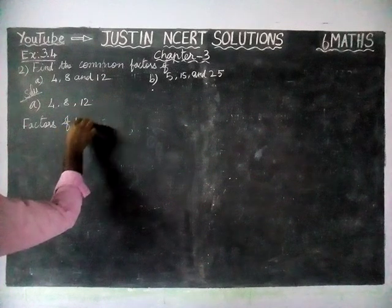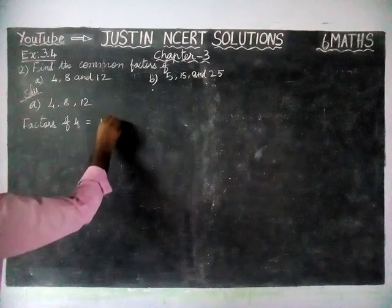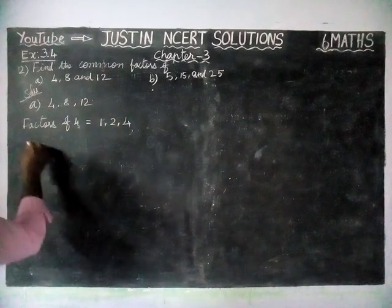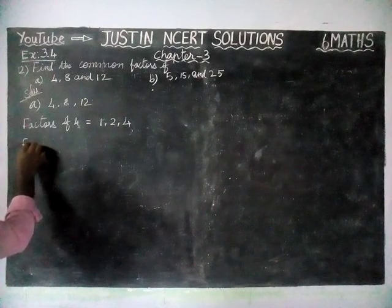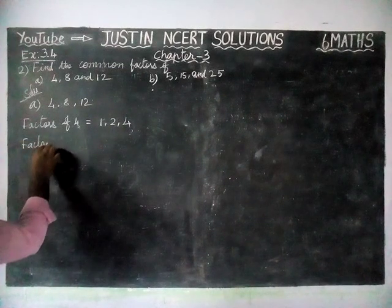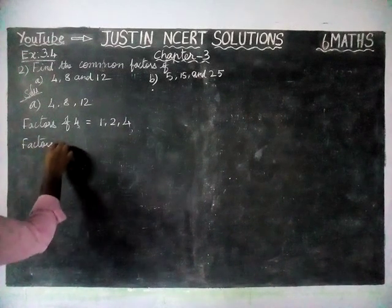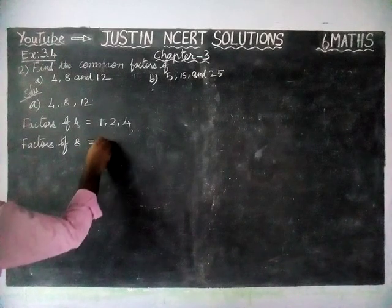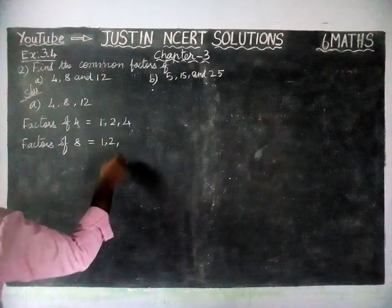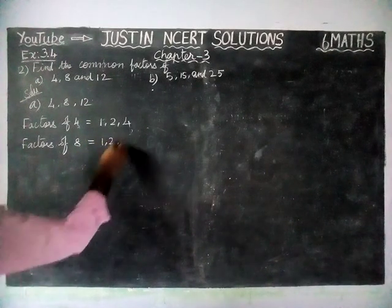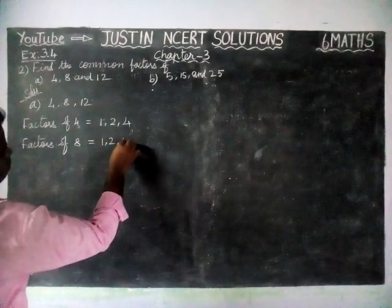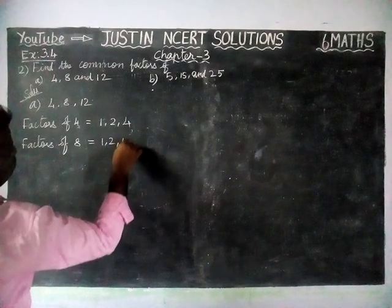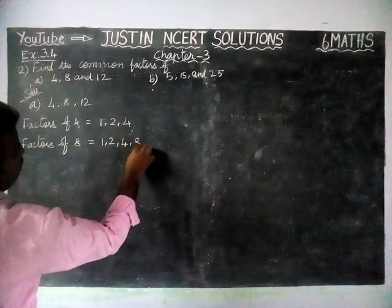Factors of 4 are equal to 1, 2, 4. Next, factors of 8 are equal to 1, 2, 4, 8.